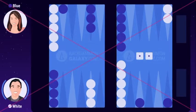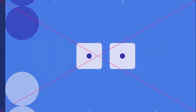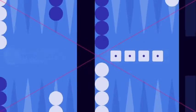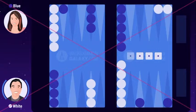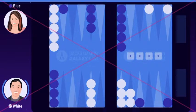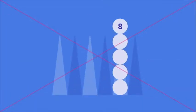White rolls double 1. When a player rolls two identical numbers, it's called a double. Rolling a double will give you twice the numbers. Just like with a regular roll, white can choose to move one checker, or separate checkers like this, as long as all four numbers are used. There's no limit to how many checkers you can place on a point.